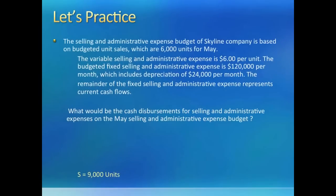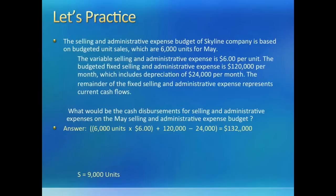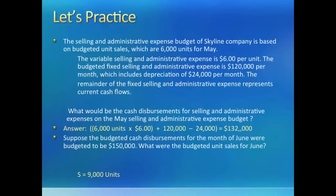Selling, general, and administrative budgets are fairly easy to make. Let's look at a couple of easy problems. The first portion is almost trivial — we multiply the budgeted sales in units by the per unit rate and add fixed costs. The twist is that the question asks for cash to be paid for selling and administrative expenses, so we take out depreciation from total costs to get cash disbursements. The second problem asks: given the cash disbursements for June, can you calculate the number of units sold that month? We do the same as part 1 but leave units sold as a variable s, plug in the given cash disbursements, and solve for s to get 9,000 units.